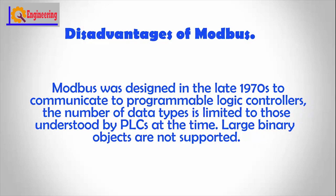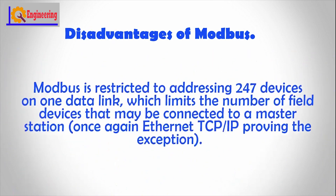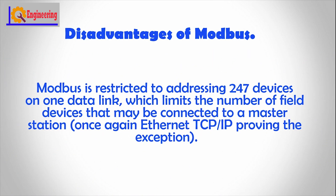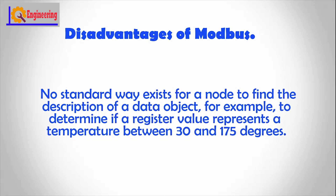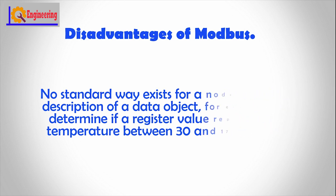Disadvantages of Modbus: Modbus was designed in the late 1970s to communicate with programmable logic controllers. The number of data types is limited to those understood by PLCs at the time. Large binary objects are not supported. Modbus is restricted in addressing devices on the data link, which limits the number of field devices that may be connected to a master station — with Ethernet TCP/IP proving the exception. No standard way exists for a node to find the description of a data object, for example to determine if a register value represents a temperature between 30 and 175 degrees.